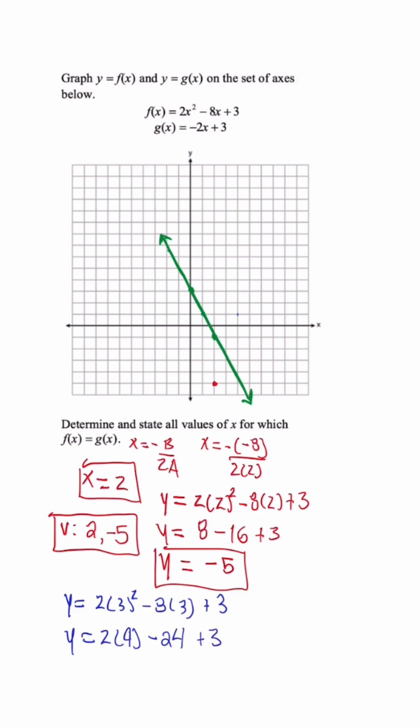So we're going to have 18 minus 24 plus 3, so y is equal to negative 3. We're talking about the order pair 3 negative 3, so once we plot that, that point's going to be right here. And just remember there's another point on the opposite side of the axis of symmetry that's going to match that point.